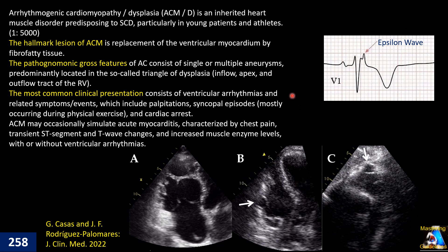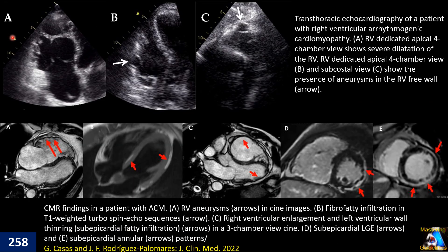Whenever we see such abnormalities, we have to correlate them with other findings, especially echocardiography and CMR. The first diagnostic tool is echocardiography. Depending on the stage of the disease, findings can include segmental wall motion abnormality, right ventricular enlargement, and systolic dysfunction. The most important diagnostic tool after echo is CMR.